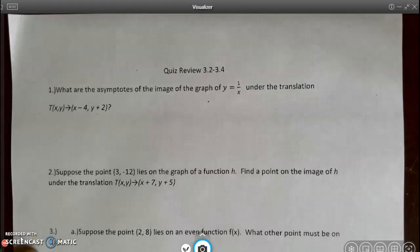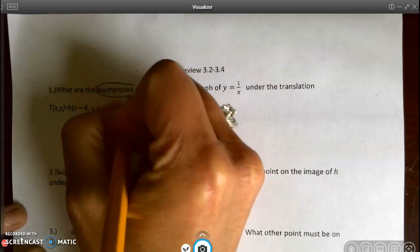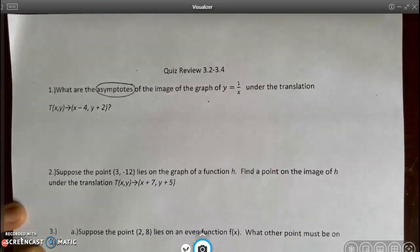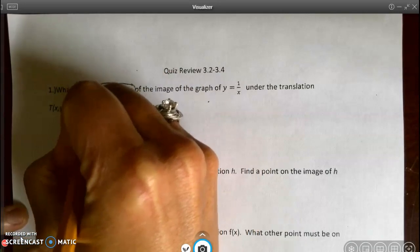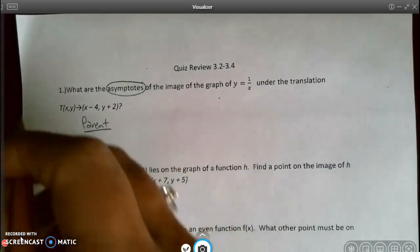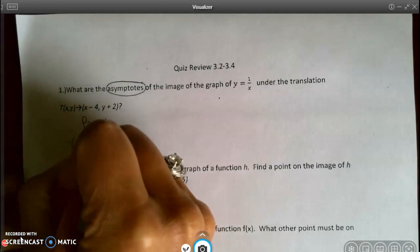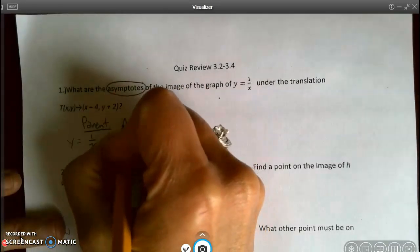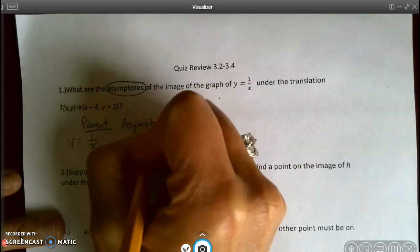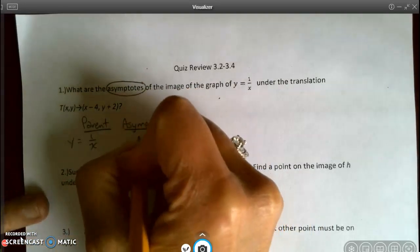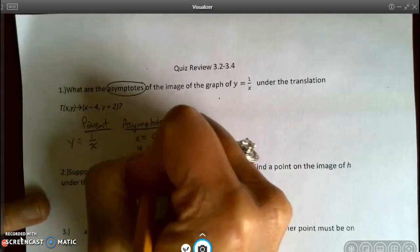This is a video for the quiz review 3.2 to 3.4. What are the asymptotes of the image of the graph of y equals 1 over x under the translation T(x minus 4, y plus 2)? I always start off with the parent, and I know that my parent function is y equals 1 over x, and I know the asymptotes for the parent function are x equals 0, y equals 0.